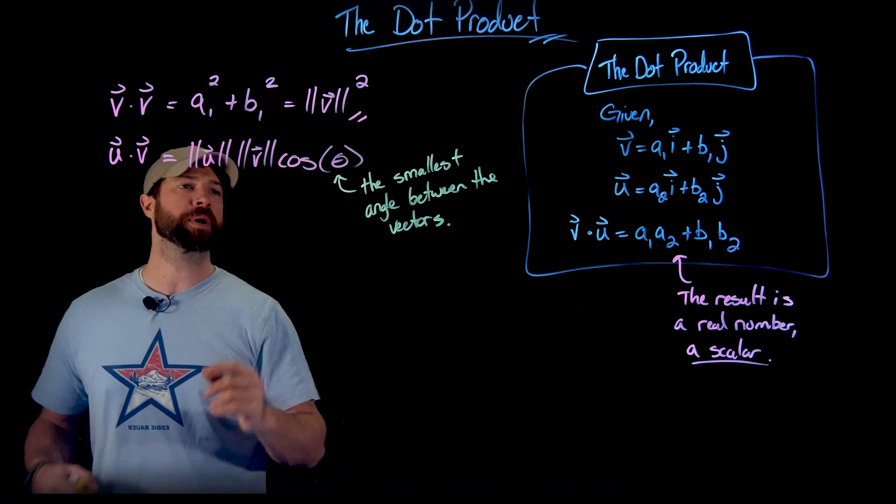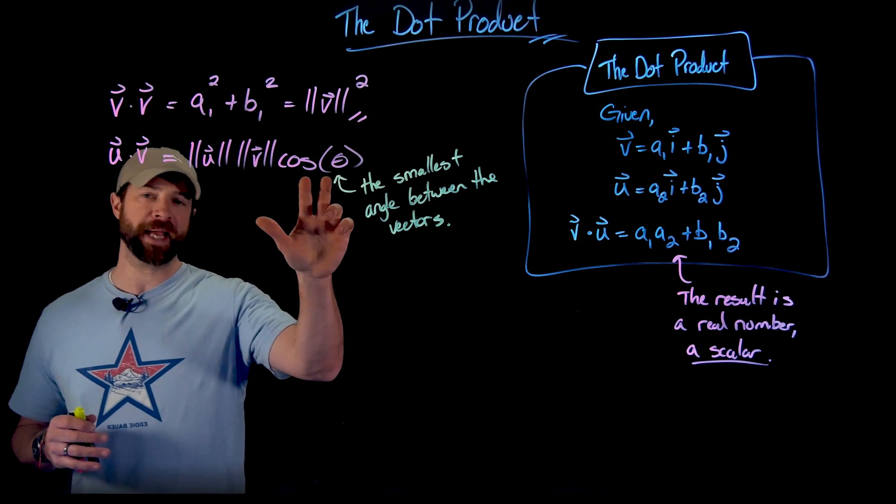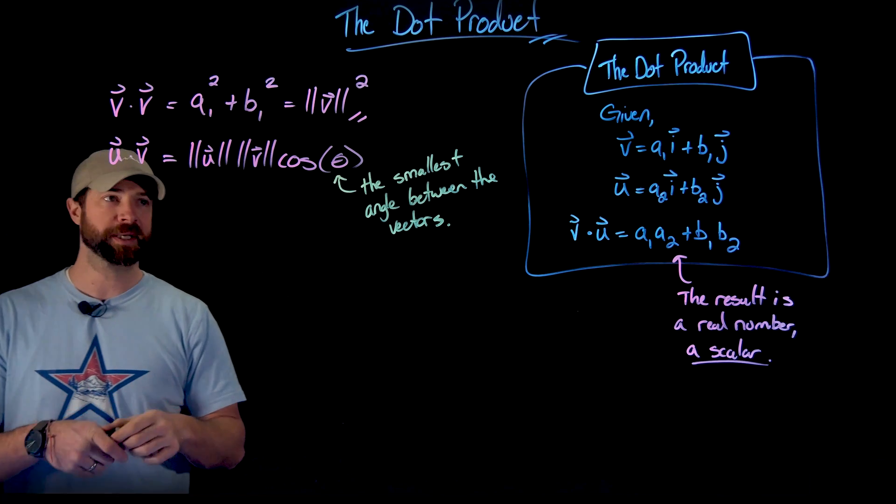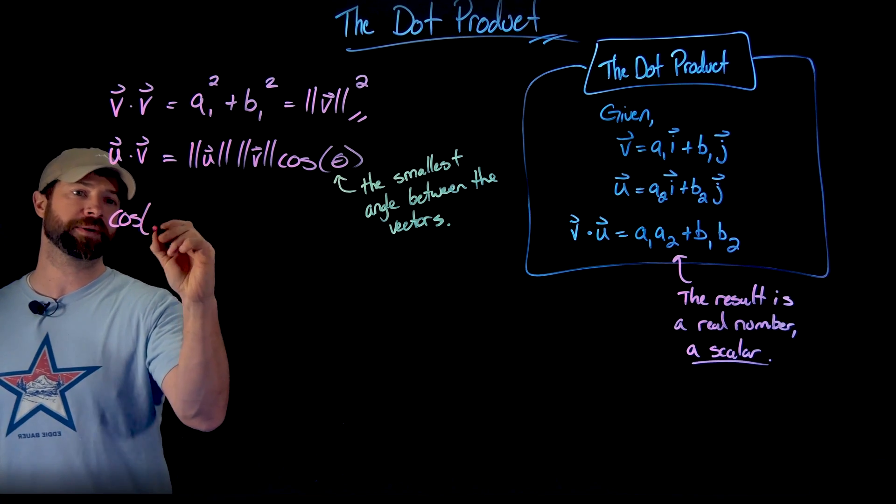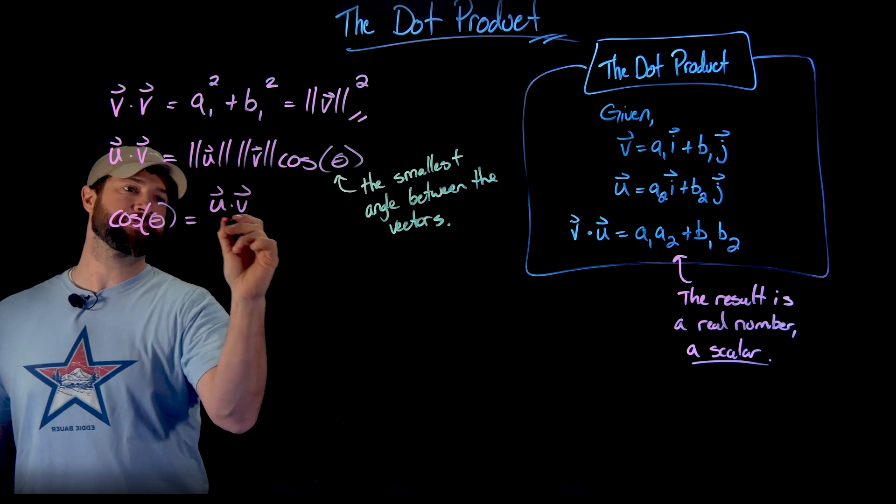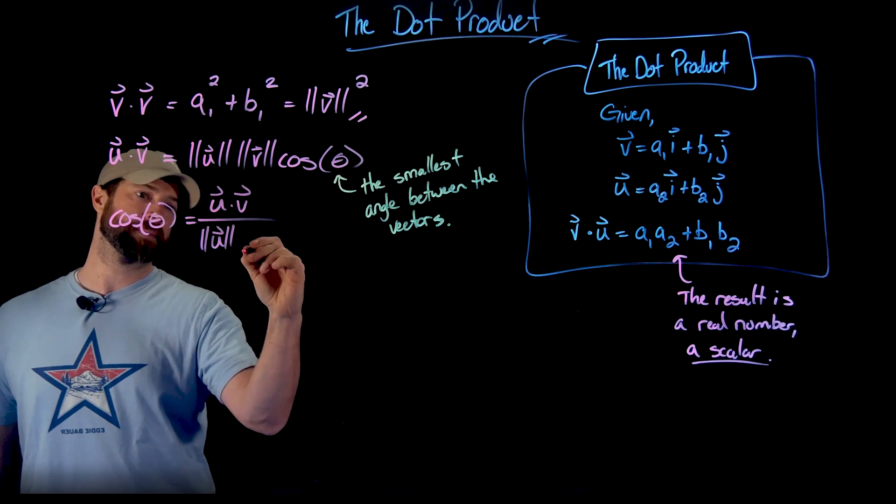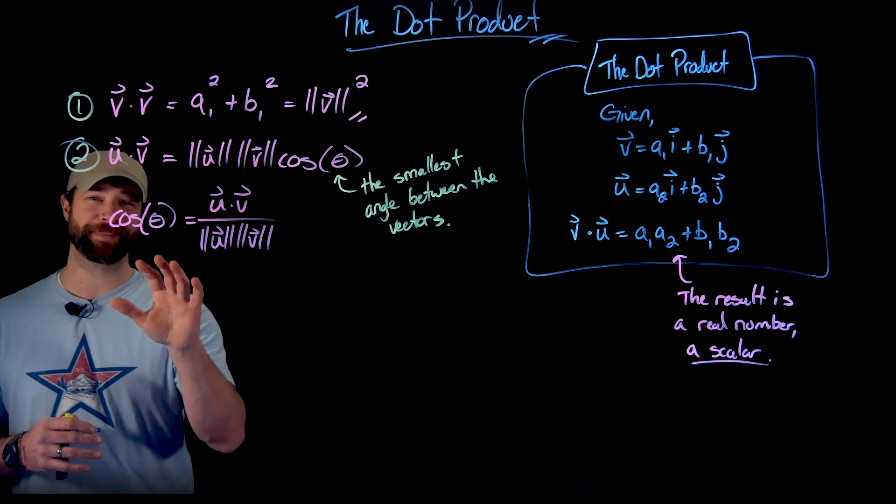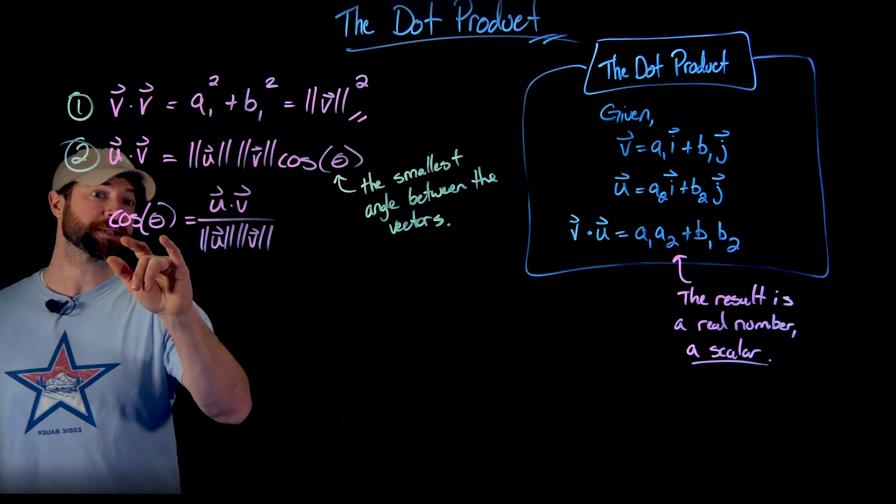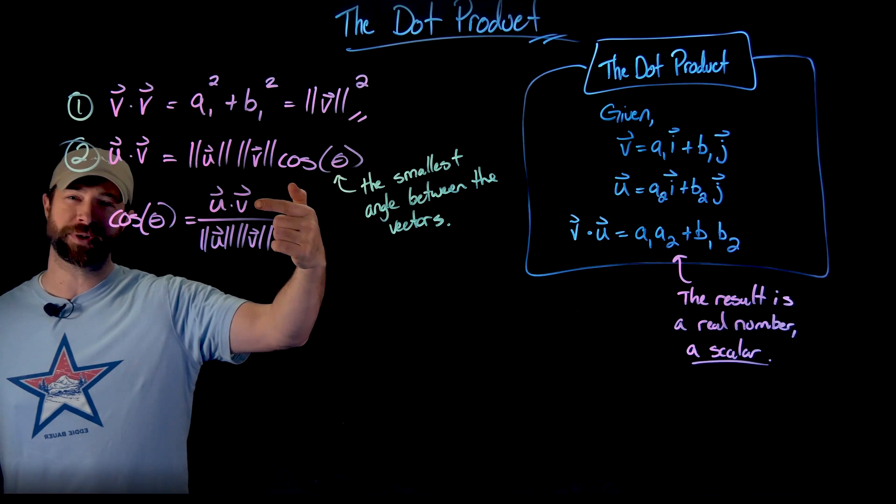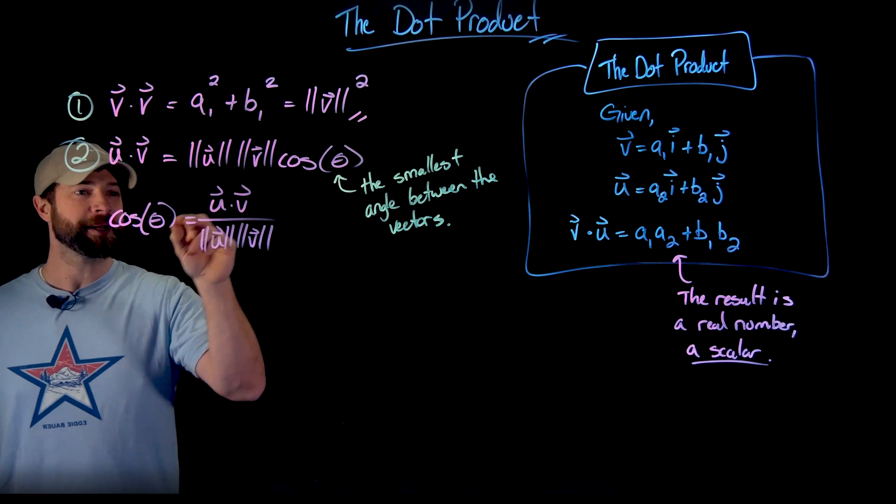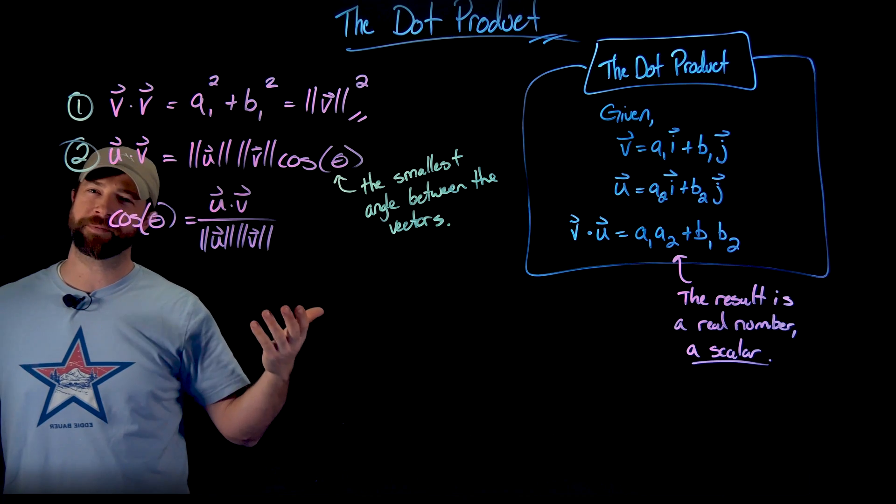But this actually gives us a really important intuition about the use of the dot product. If we solve this for cosine, what we would get is the cosine of the smallest angle between these two would be the dot product, u dot v, divided by their magnitudes. The importance of this might not seem obvious right away, but one important thing is thinking, when is this zero? This cosine will be zero if the dot product is also zero, because zero divided by anything is zero. So importantly, the cosine is zero if the dot product is zero. But what does it mean for the cosine to be zero?